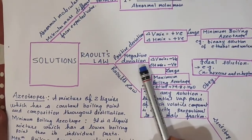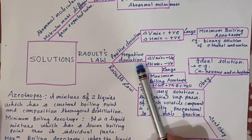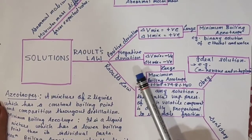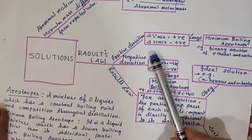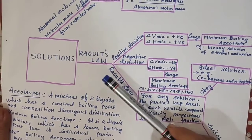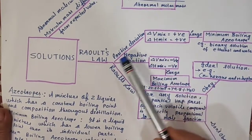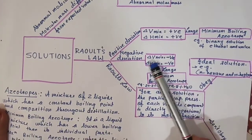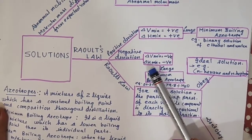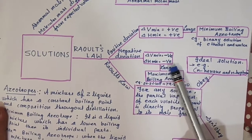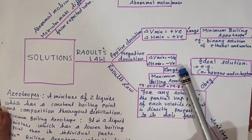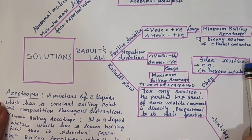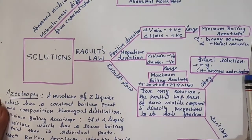Then what about negative deviation? Those who obey Raoult's law completely are ideal solutions. Those who do not obey are non-ideal solutions. In non-ideal solution there is positive deviation or negative deviation. Negative deviation: delta V of mixture is negative and delta H of mixture is also negative.